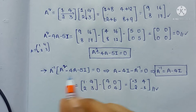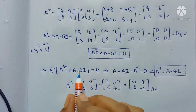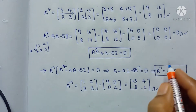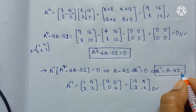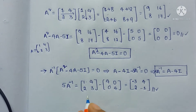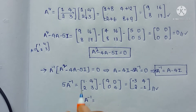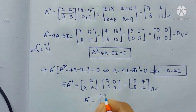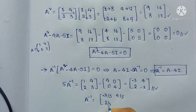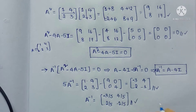If you see here, A inverse into A squared gives A, and A inverse into 4A gives 4I, and minus 5 into A inverse gives 5A inverse, and 5A inverse is equal to A minus 4I. Here 5A inverse is equal to this value. So coming to the A inverse value, we get minus 3 by 5, 4 by 5, 2 by 5, and minus 1 by 5. This is the A inverse matrix.